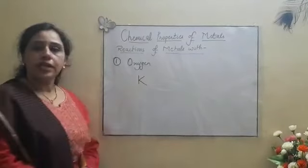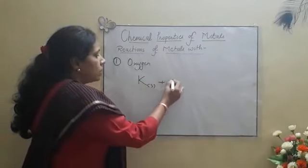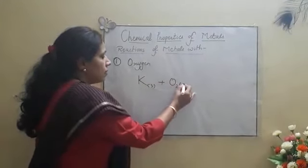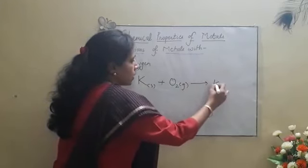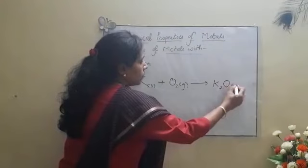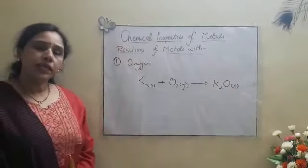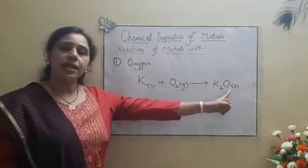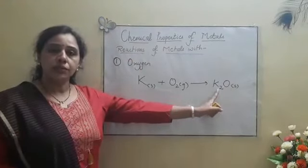Molecular formula of potassium is K. It will react with oxygen present in air at room temperature to form its oxide, K2O. The molecular formula of potassium oxide will be K2O because oxygen has valency 2 whereas potassium has valency 1.